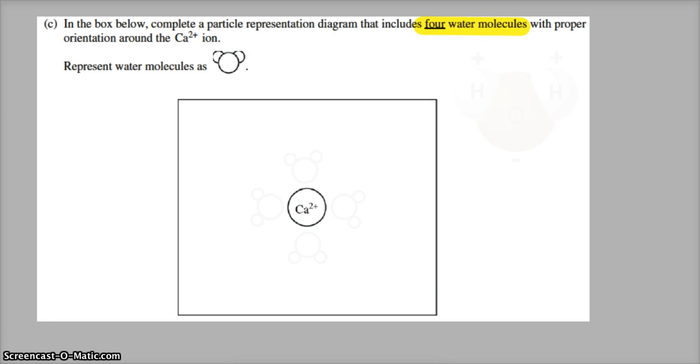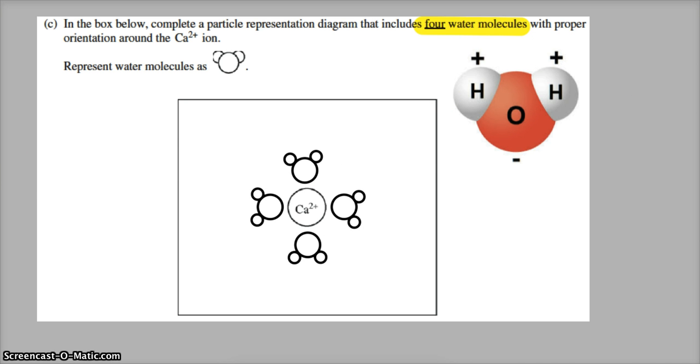What you gots to remember is that our water molecules, the ears of Mickey Mouse, are the hydrogens. That's positive. The chin of Mickey Mouse is the oxygen that's negative. With the calcium ion being positive, we need to orientate the water molecules around it with the negative oxygens facing it.